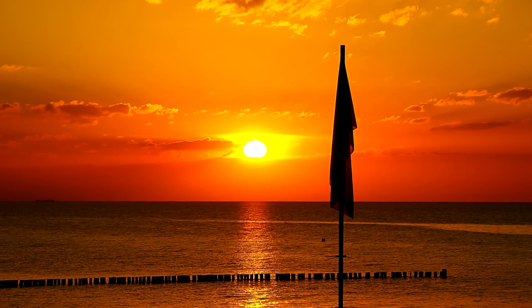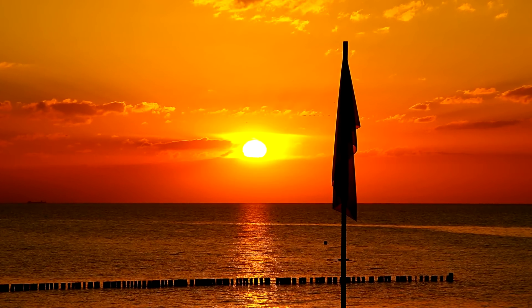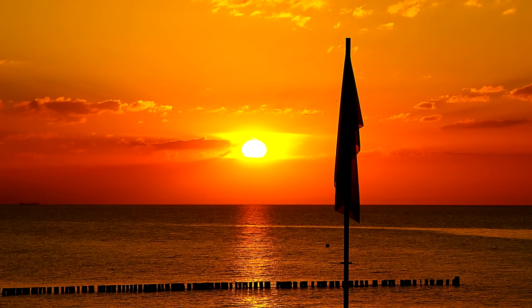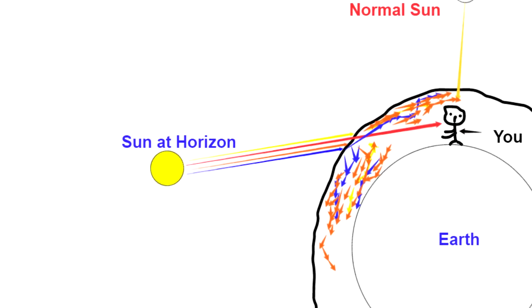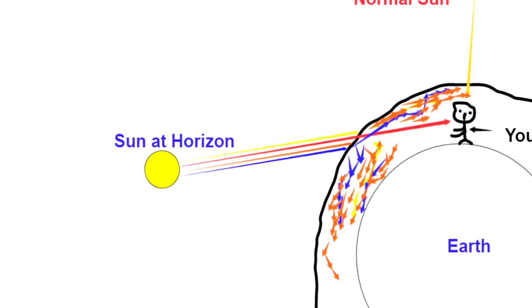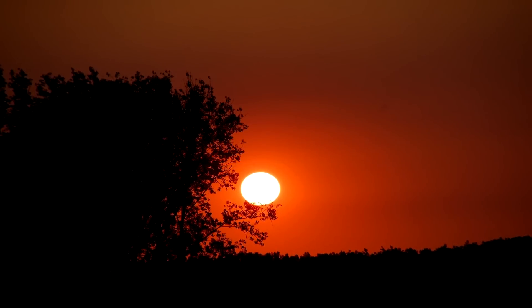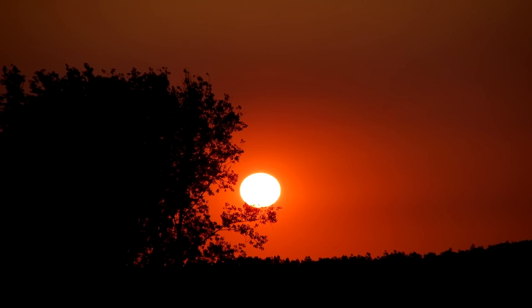But during sunrise and sunset, the sun appears red or orange. This happens because when the sun is at the horizon, the light has to travel more through the atmosphere to reach our eyes. During this time, short wavelength colors are completely scattered by Earth's atmosphere and only long wavelength colors such as red or orange reach our eyes.